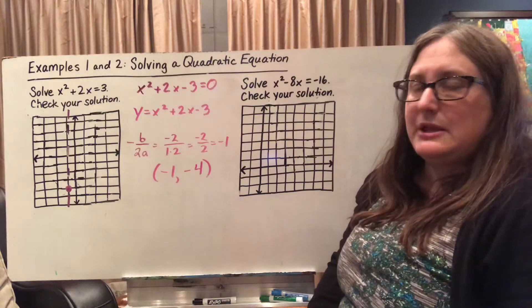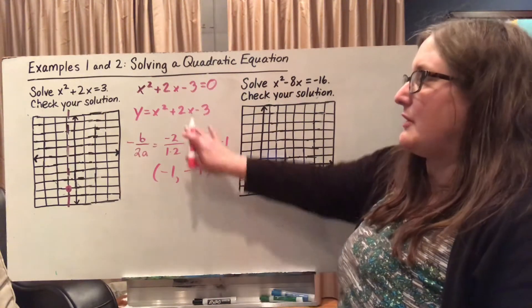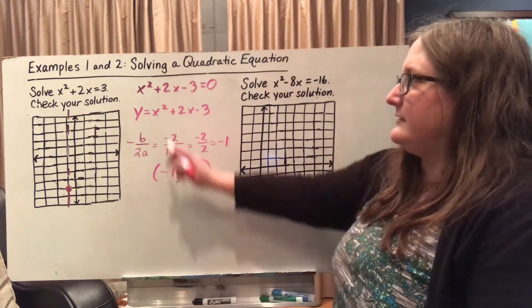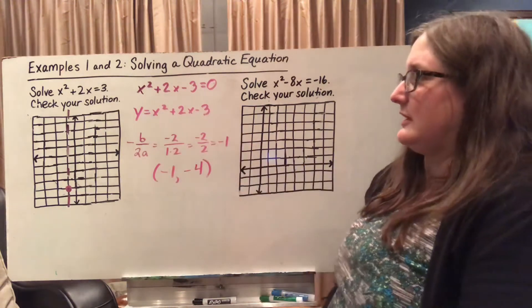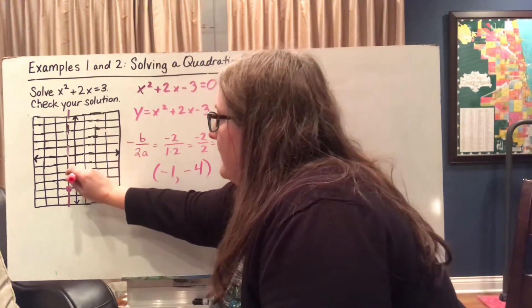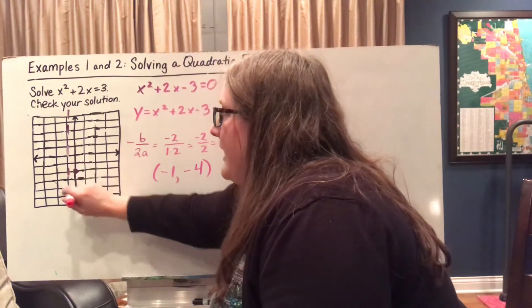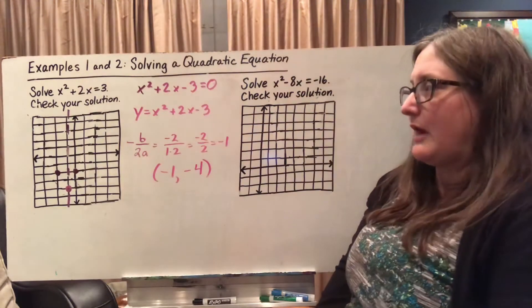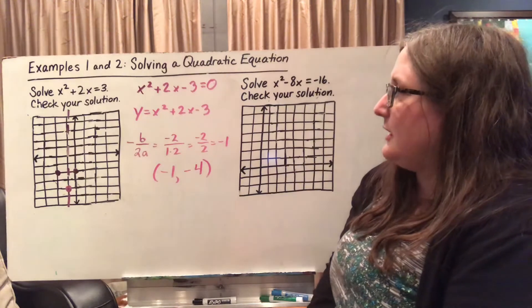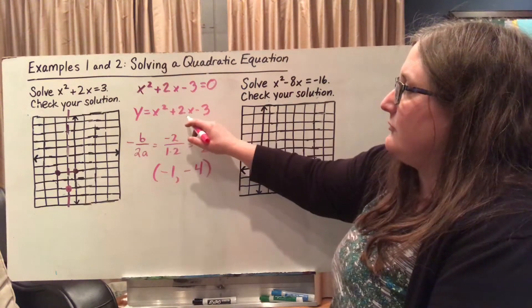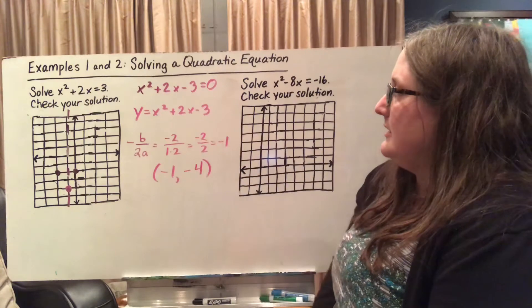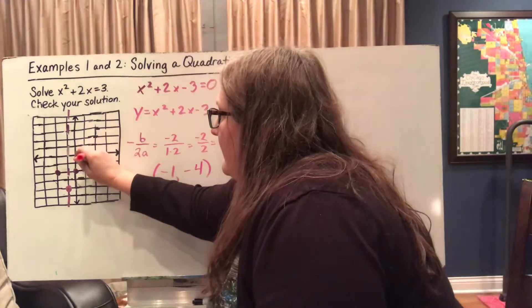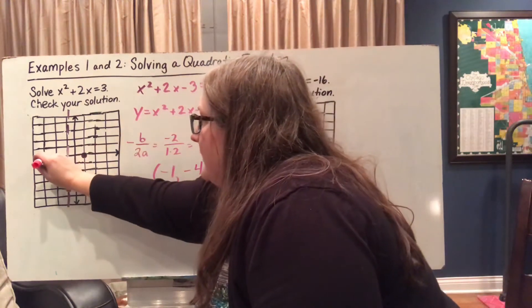I can use that to help me graph points to find the parabola of this quadratic equation. So if I plug in 0, 0 + 0 - 3 gives me negative 3. So I'll have (0, -3). I'll also have (-2, -3) because I need a symmetrical parabola. If I plug in 1, 1² + 2(1) - 3 gives me 0. So I have (1, 0), and I'm going to have on the other side (-3, 0).